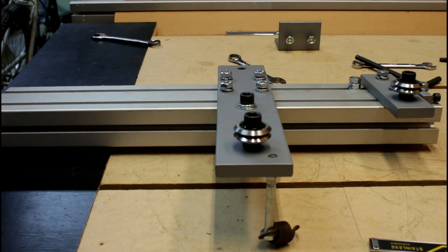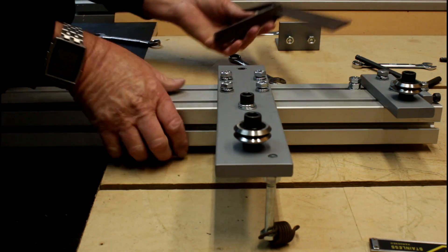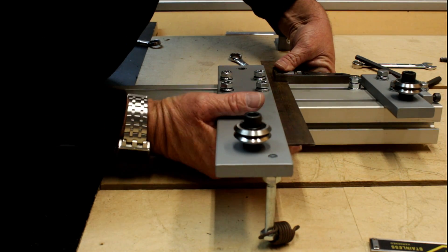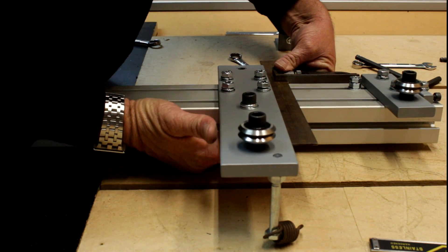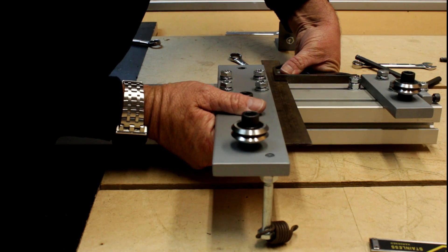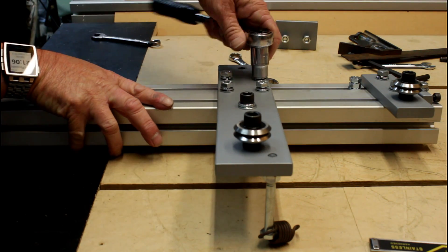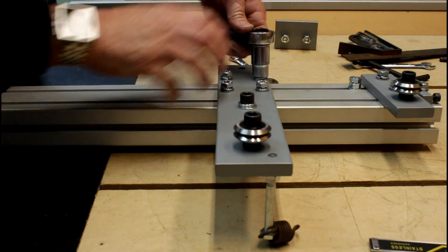It's important that this piece goes on square. When the rail was made, everything was referenced off one side of the piece of steel, and I'm using that side to square it up to the extrusion. I'm now just going to tighten the bolts down lightly so that it just holds in place.